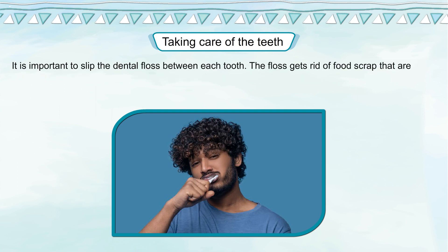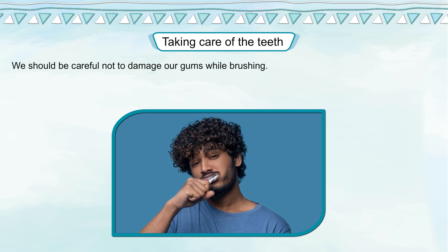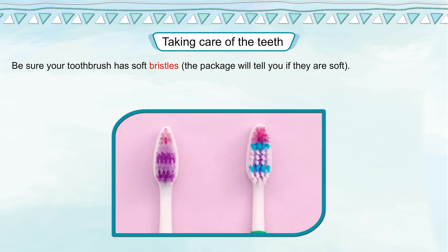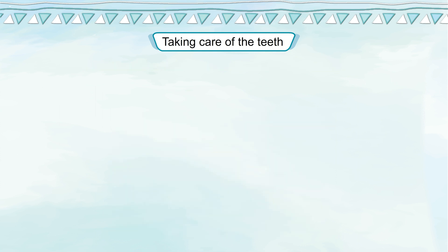It is important to slip the dental floss between each tooth. The floss gets rid of food scraps that are hidden where the toothbrush cannot reach. We should be careful not to damage our gums while brushing. It is good to spend at least two to three minutes each time we brush. Be sure your toothbrush has soft bristles, and change your toothbrush every three months.